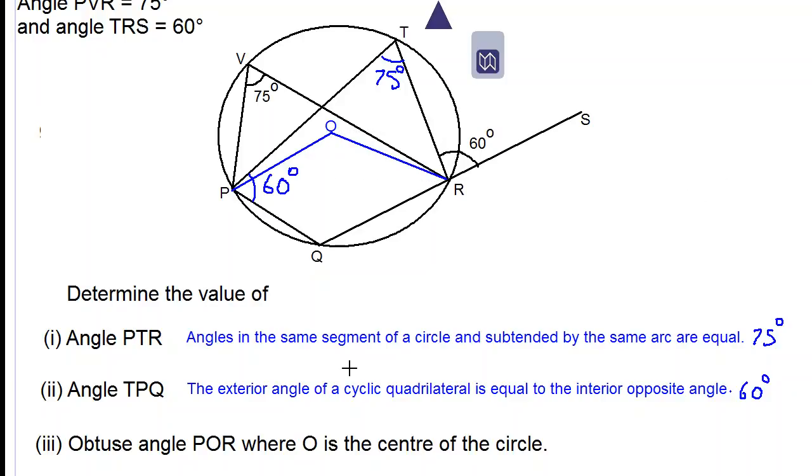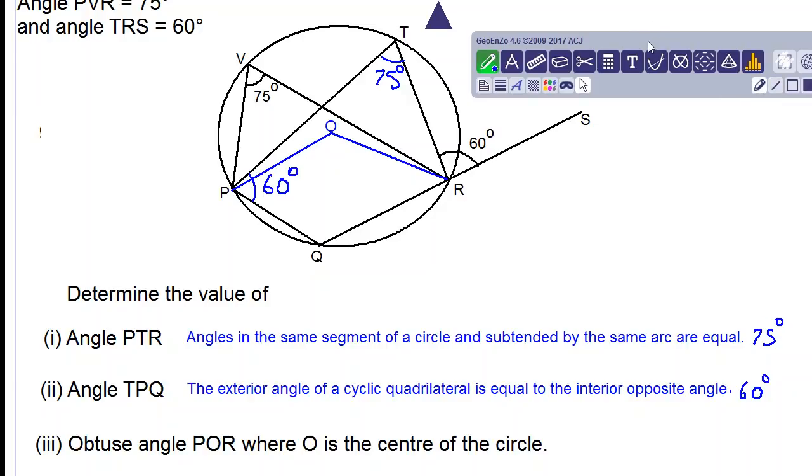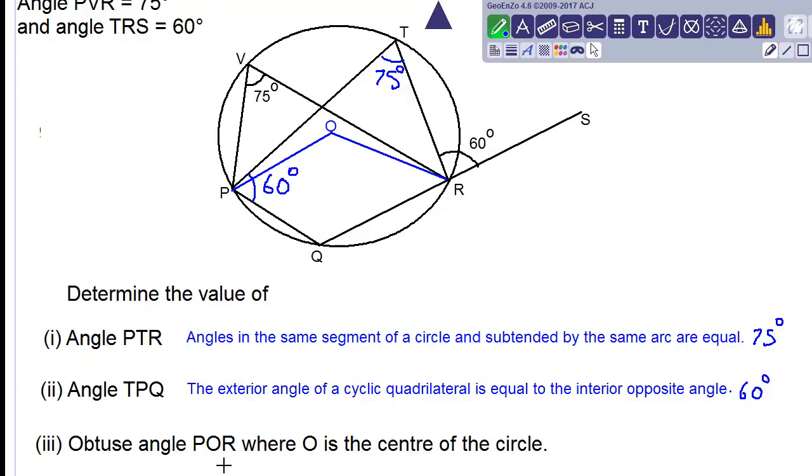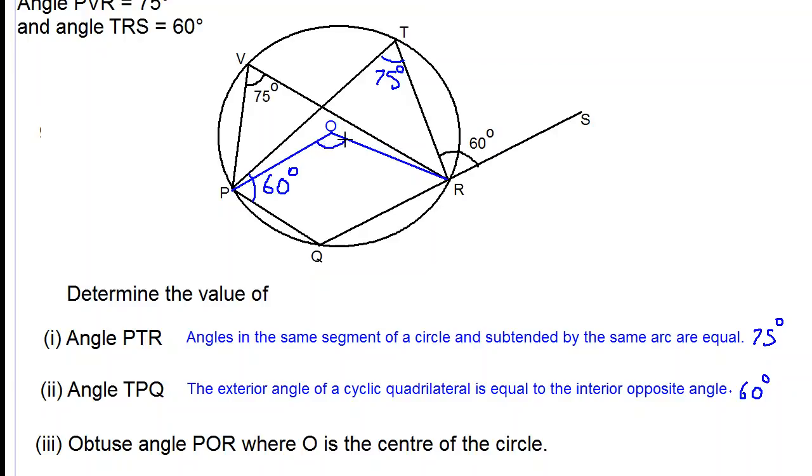So we can see what we are asked to find: obtuse angle POR. So this is the angle we are asked to find. It is more than 90 but less than 180, an obtuse angle.